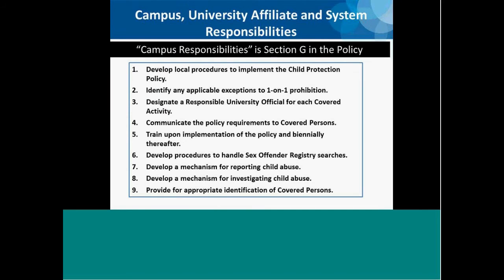The responsibilities of each campus, university-affiliated organization, and system administration under the Child Protection Policy are listed in Section G of the policy. There are nine primary responsibilities. Number one: developing local procedures to implement the Child Protection Policy. Two: identifying any applicable exceptions to the one-on-one prohibition, which will be discussed further.